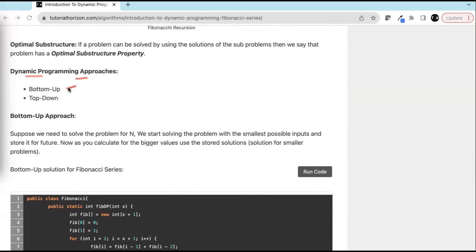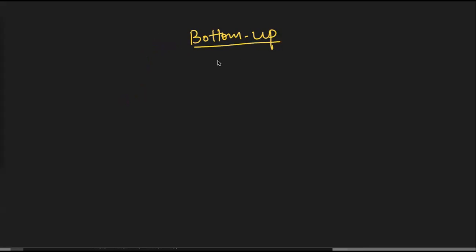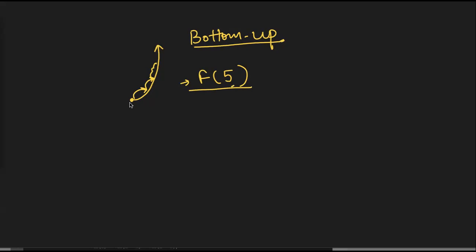Dynamic programming has two approaches: bottom-up and top-down. In the bottom-up approach, as the name suggests, we start from the bottom and go up. That means we start from the smallest possible sub-problem, then go to the next smallest sub-problem, and so on.